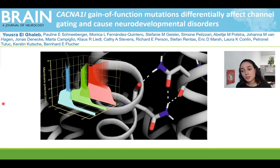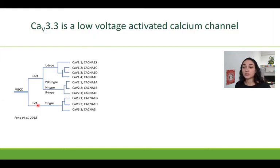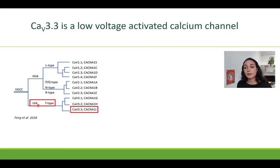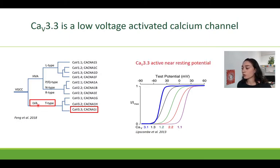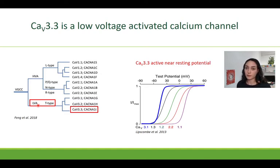The CACNA1I gene codes for the Cav3.3 channel, which is a calcium channel belonging to the low voltage activated T-type channels. These have a voltage dependence of activation near the resting membrane potential of nerve cells, where they are responsible for low threshold calcium spikes and regulate excitability and rhythmic activity of neuronal circuits.